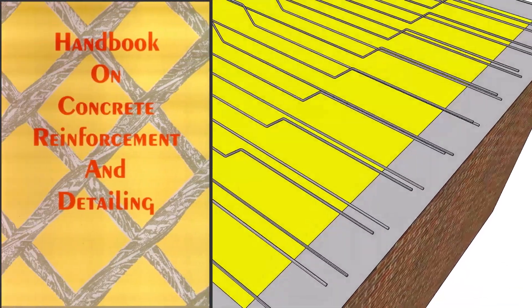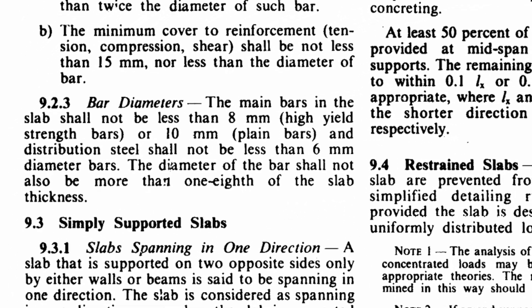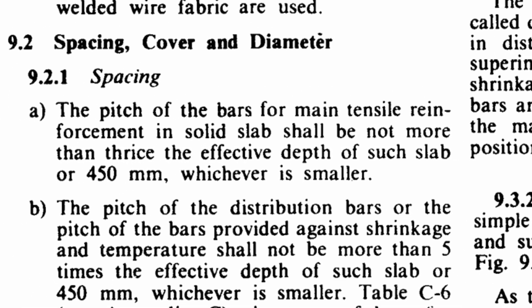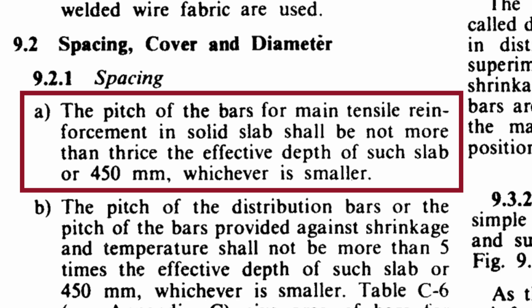According to SP34, the diameter of the main bars in the slab shall not be less than 8 mm where HYSD bars are used, and 10 mm for plain bars. The spacing of these bars shall not be more than 3 times the effective depth of slab or 450 mm, whichever is smaller.